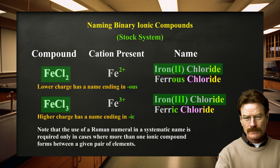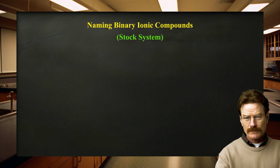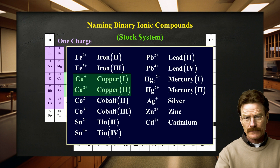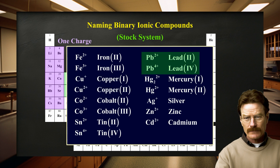The use of a Roman numeral in a systematic name is required only in cases where more than one ionic compound forms between a given pair of elements. This most commonly occurs for compounds containing transition metals, which often form more than one cation. Elements that form only one cation do not need to be identified by a Roman numeral. A majority of transition and post-transition metals can lose multiple electrons. For example, copper can lose one or two electrons to form a 1+ and 2+ cation, and lead can lose two or four electrons to form a 2+ and 4+ cation.